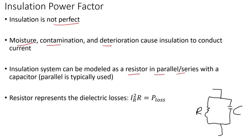With a capacitor, and typically parallel is used. So what you see here, you have the capacitor in parallel with the resistor. The resistor represents the dielectric losses. We know there should be no current flowing, but because insulation is not perfect, there will be some losses.